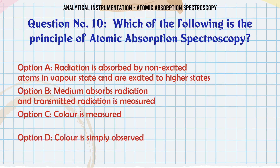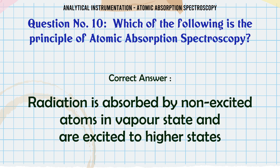Which of the following is the principle of atomic absorption spectroscopy? A. Radiation is absorbed by non-excited atoms in vapour state and they are excited to higher states. B. Medium absorbs radiation and transmitted radiation is measured. C. Color is measured. D. Color is simply observed. The correct answer is: radiation is absorbed by non-excited atoms in vapour state and are excited to higher states.